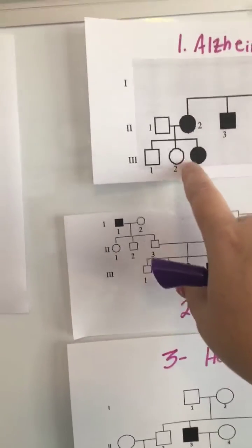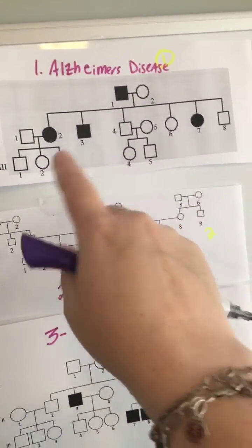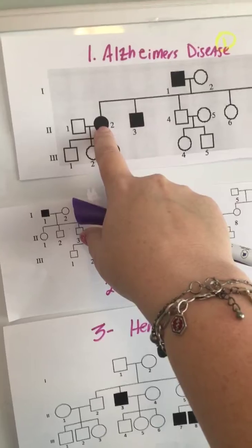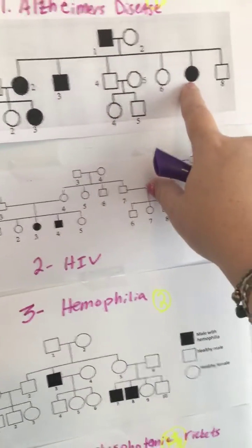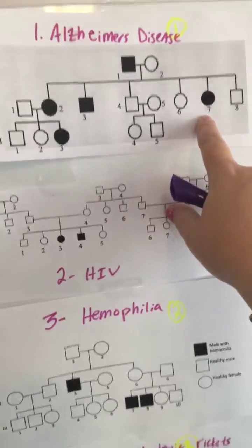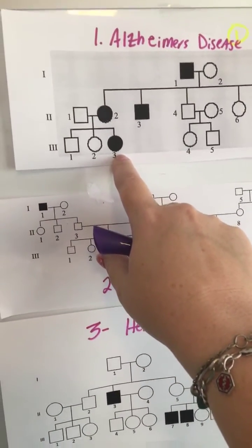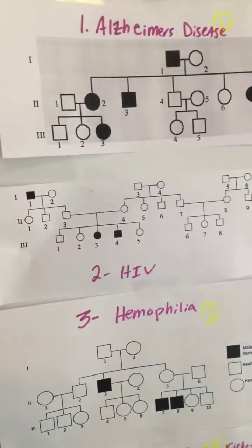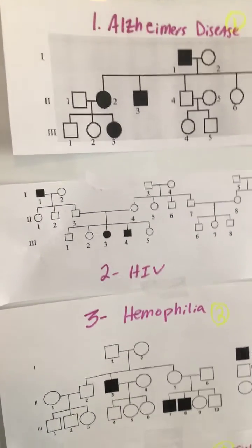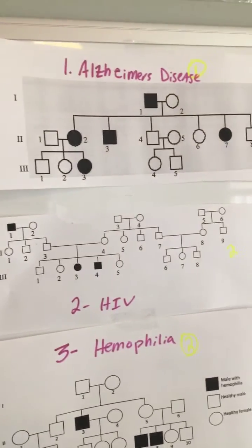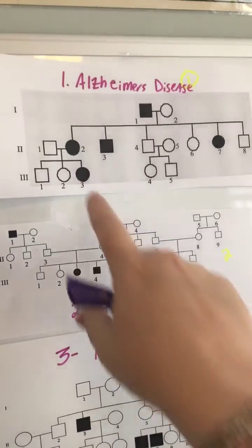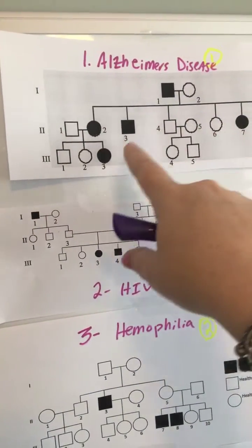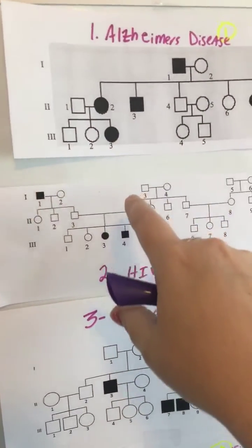I look at pedigrees from the bottom up — it works to see the whole picture. In this first pedigree, we see a kid that has it and a parent that has it, so that's more than likely dominant. One family doesn't have it, and female number seven doesn't have it. But a parent has it, kids have it — this is a dominant trait. It's autosomal dominant because it's not affecting just one gender.